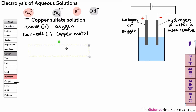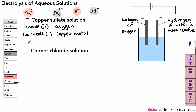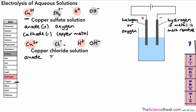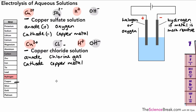The next example is a solution of copper chloride. The ions are: copper ions (Cu²⁺), chloride ions (Cl⁻), and H⁺ and OH⁻ from the water. At the anode, we check for halide ions — and we have Cl⁻ — so we're going to get chlorine gas at the positive electrode. At the cathode, we've got copper again, which is less reactive than hydrogen, so we get copper metal deposited on the cathode.